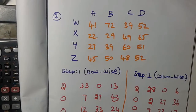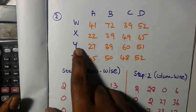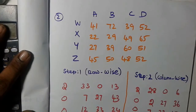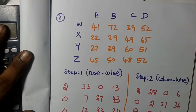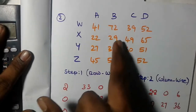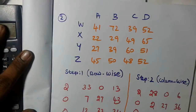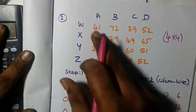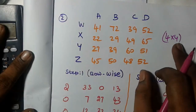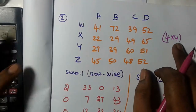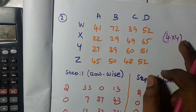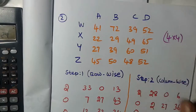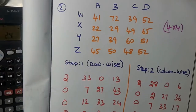In this video on the assignment problem, we will solve the assignment problem. First, check whether it is balanced or unbalanced. The number of rows is four and the number of columns is four, so this is a four-by-four matrix. Since rows equal columns, this is a balanced assignment problem. Now we follow the Hungarian algorithm.